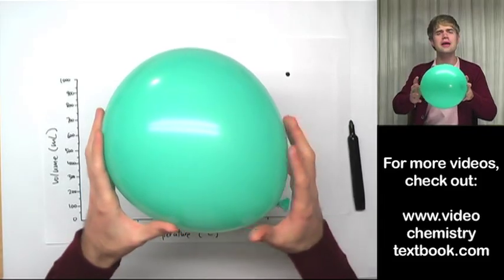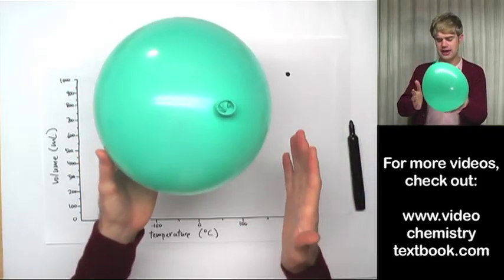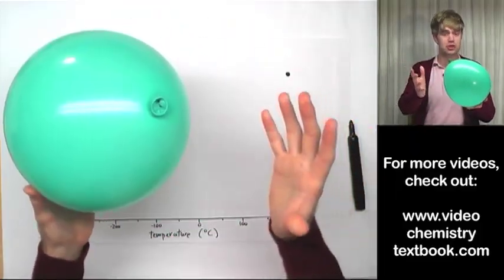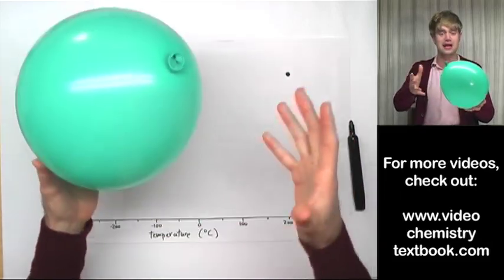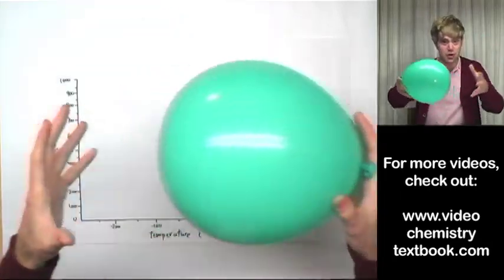And then what I'm going to do is I'm going to lower the temperature to say 150 degrees and I'm going to measure what happens to the volume. Well you already know what's going to happen, the volume is going to shrink because the kinetic energy of the gas particles lowers. They're not banging as hard against the inside of the balloon so it's going to shrink.